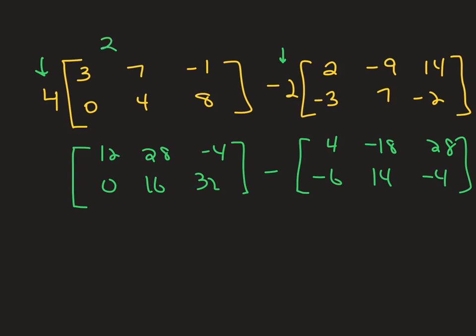I should have checked that first. This was a 2 by 3, this one's a 2 by 3. You always do rows first. It has two rows going this way, 3 columns going that way. They're both 2 by 3. Now just subtract straight across. 12 minus 4 is 8, 28 minus negative 18 is 46, negative 4 minus 28, 0 minus negative 6, 16 minus 14, 32 minus negative 4, and there you go.